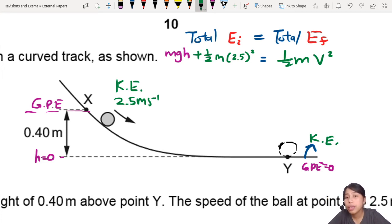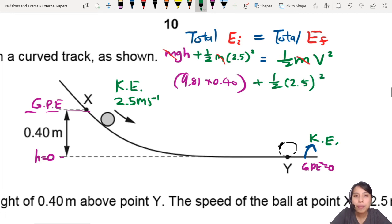Now, what shall we do next? Yes, we can divide every term by M and make life so much easier. So the height here will be G times, let me just plug in all the values so you can see them. 9.81 times 0.4. That's the first one. Plus half 2.5 squared equals to half times V squared. So that's what we're trying to find.